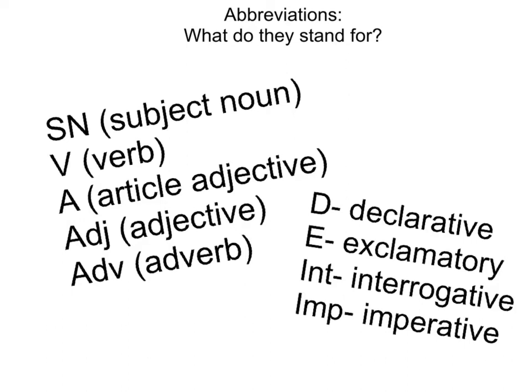Then finally we have adverbs and we use the abbreviation ADV. We've got three questions we ask when we're looking for adverbs within our sentences. These questions are: when, where, and how. If there are any words that answer those questions, then you've found an adverb. Another good hint is most of the time words ending in L-Y are going to act as adverbs within the sentence.